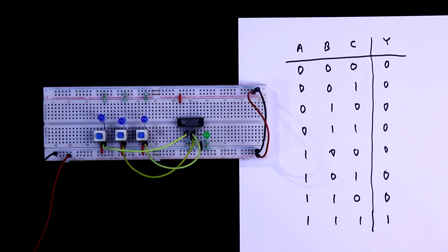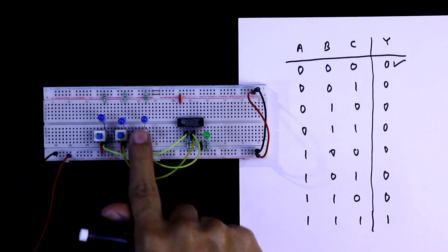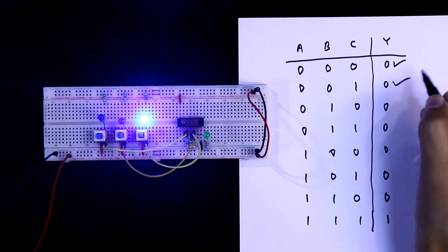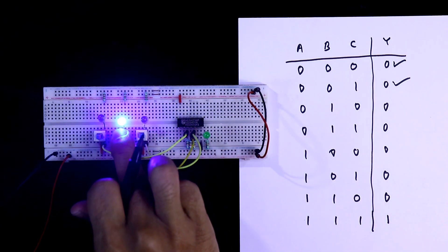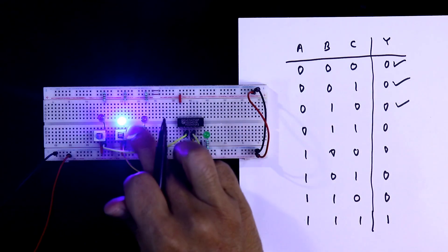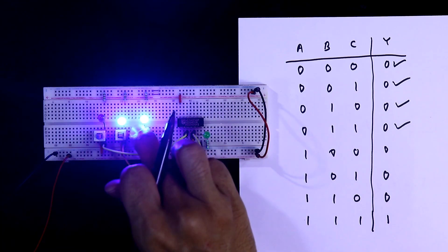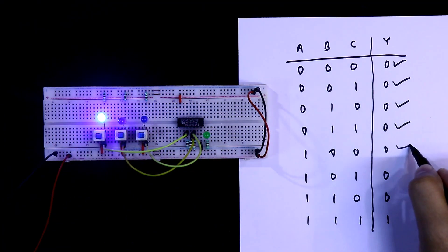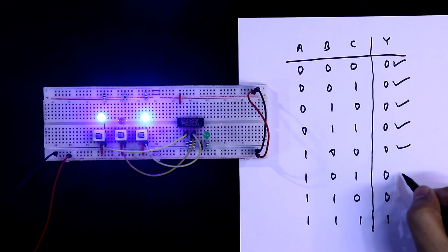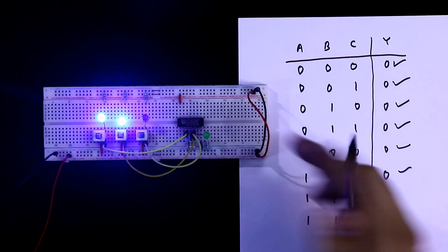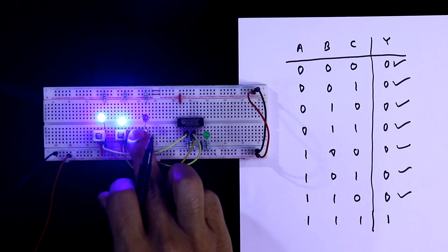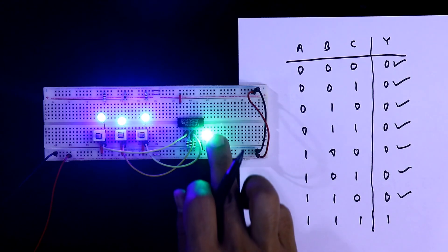0, 0, 0 means 0. 0, 0, 1 is 0. For 1, 1, 1, we are getting the output.